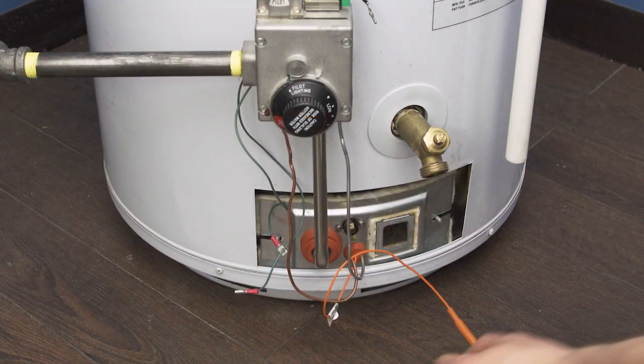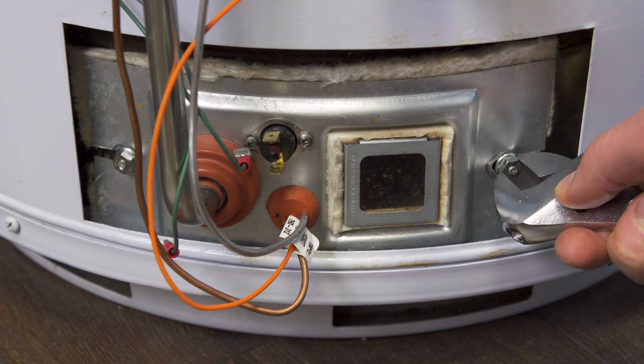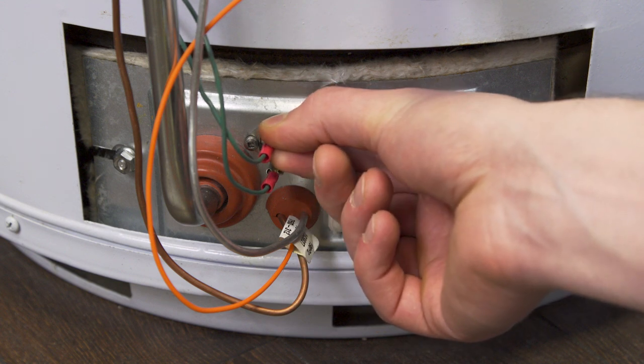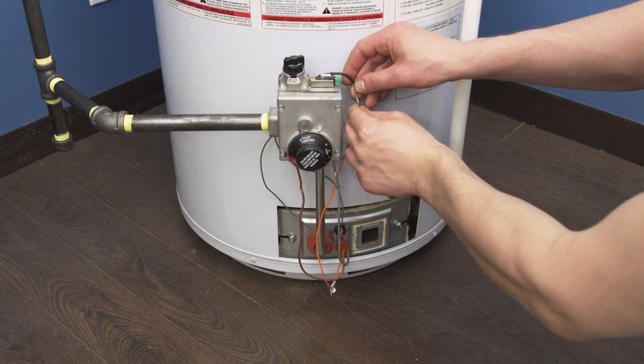Next tighten the door screws. Reconnect the wires to the thermal cutoff switch. Finally connect the igniter wire.